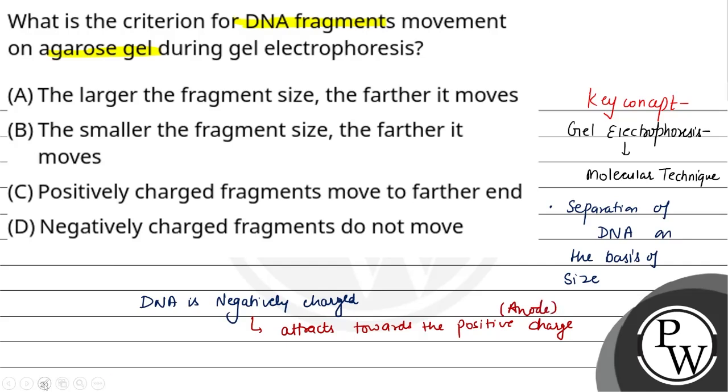And if the segment is small or light, it will move fast. Smaller the fragment size will move fast, and where will it be? At the anode.